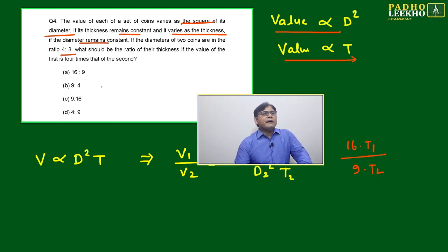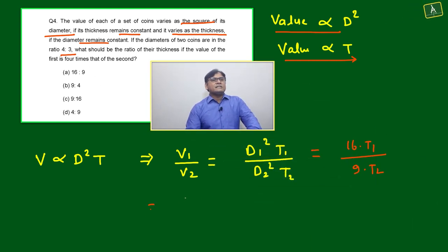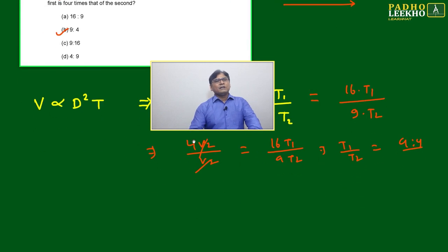What is given? Value of first is four times the second, means it will be 4V₂ divided by V₂. This we can say the T₁ ratio T₂ will become 9/4.